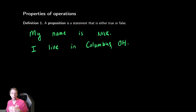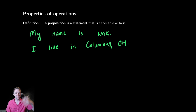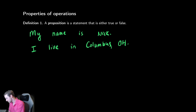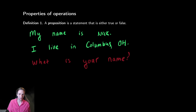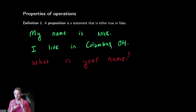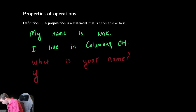And you could keep going and write down more and more things that are either true or false. Rather than list off a bunch of things that are propositions, it often is more helpful to list out things that aren't propositions. So an example of something that's not a proposition might be 'What is your name?' That is a question. Questions are not propositions — they are neither true nor false. Similarly, things like affirmations — yes, no — are not propositions.